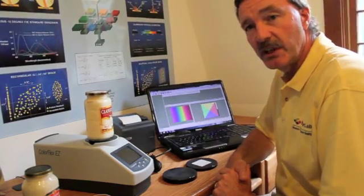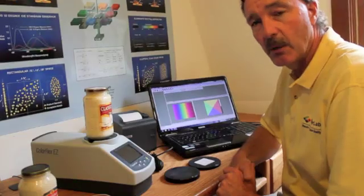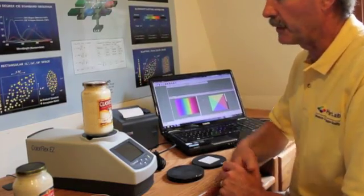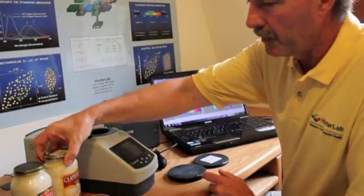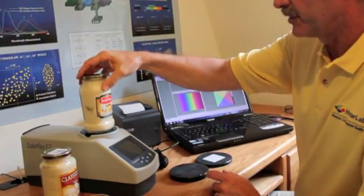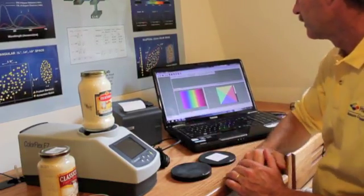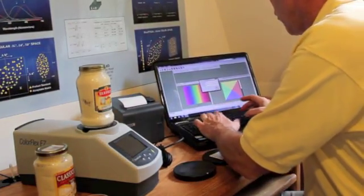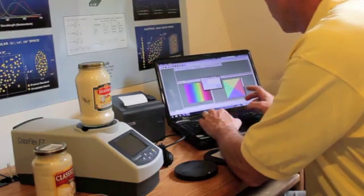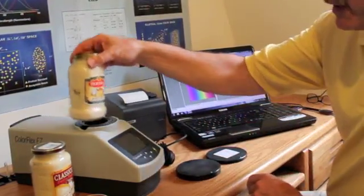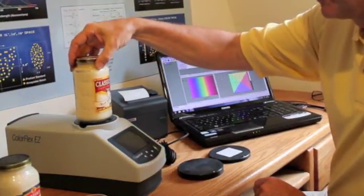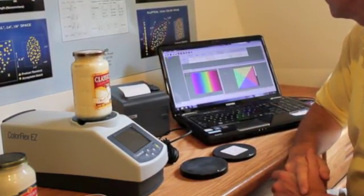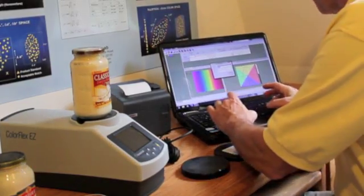Some people in production settings use the instrument just as a standalone system. However, we can all produce additional reports using our EasyMatch QC software. Here, I'll go back and measure our first product, our Bertolli sauce, and call that our standard. It takes about 3 seconds to take a measurement, and I'll type in product identifier. Now I'll compare that against the Classico sauce. And this will be our sample. And I'll type in the name Classico.